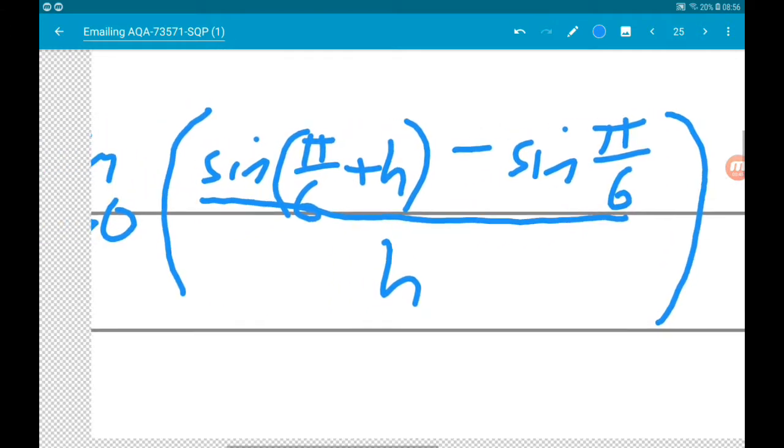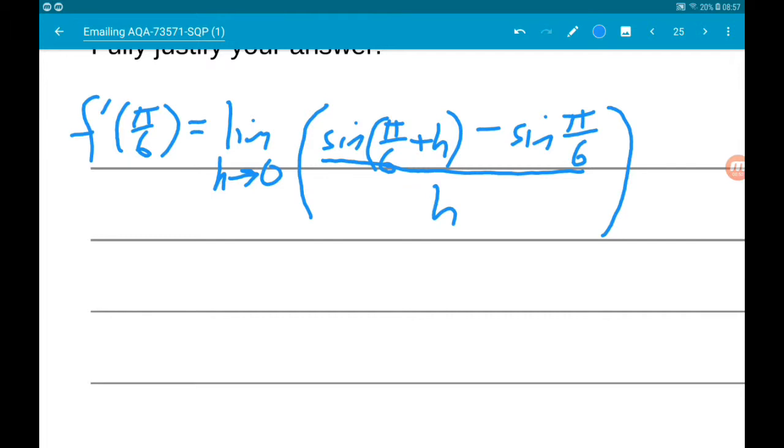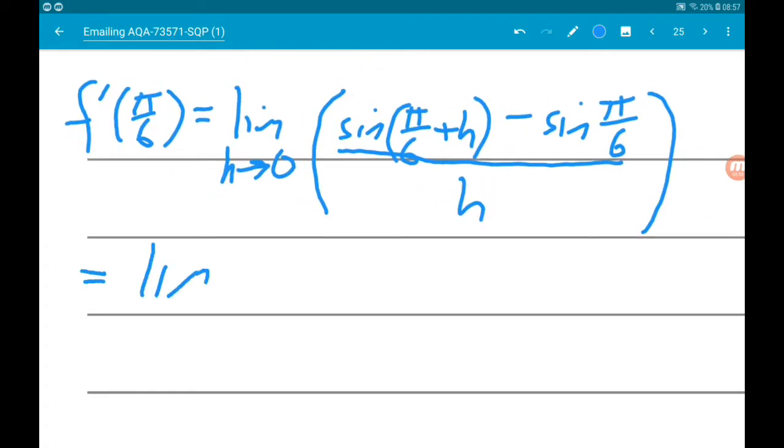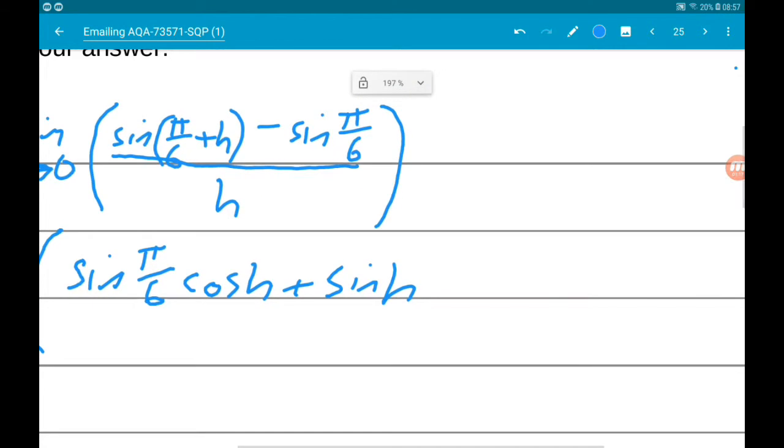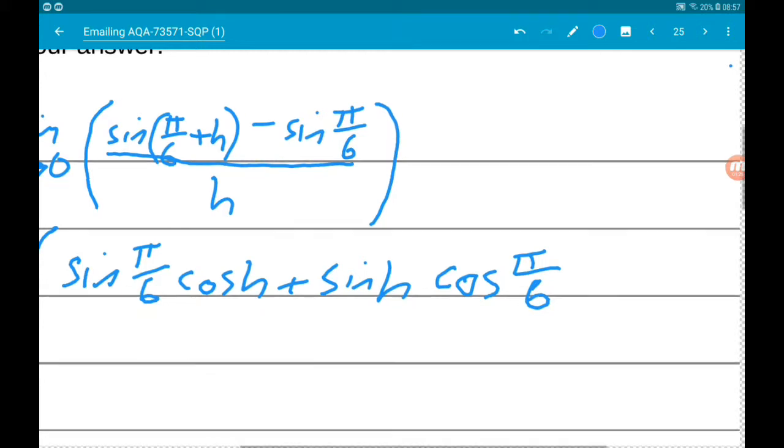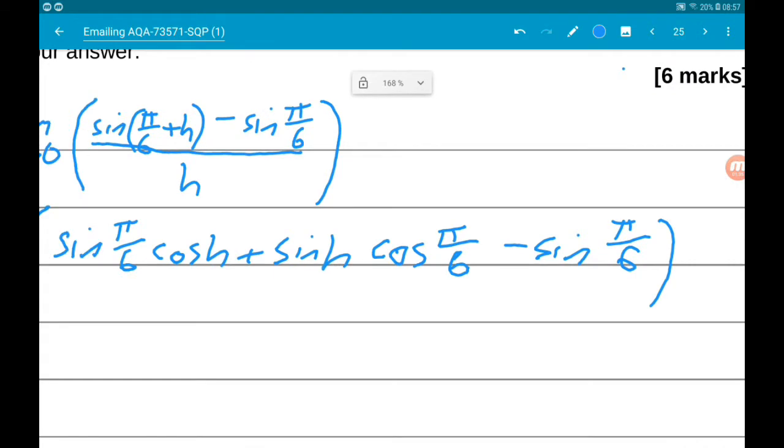Okay, so using the angle addition formula, which is given to us in the formula sheet, we get the limit as h tends to zero of sine of pi by six cos h plus sine h cos of pi by six, and then we got the minus sine of pi by six at the end, and that is all over h.